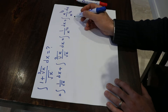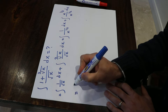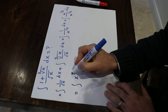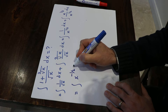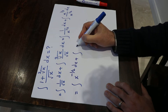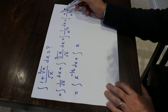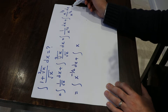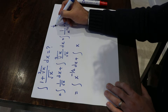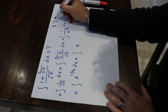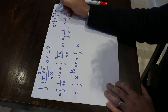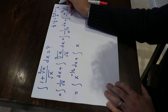This expression will be equal to the integral of x to the power of minus 1/2 dx, plus the integral of x to the power of 1/3 minus 1/2. And 1/3 minus 1/2 equals 2/6 minus 3/6, which equals minus 1/6.